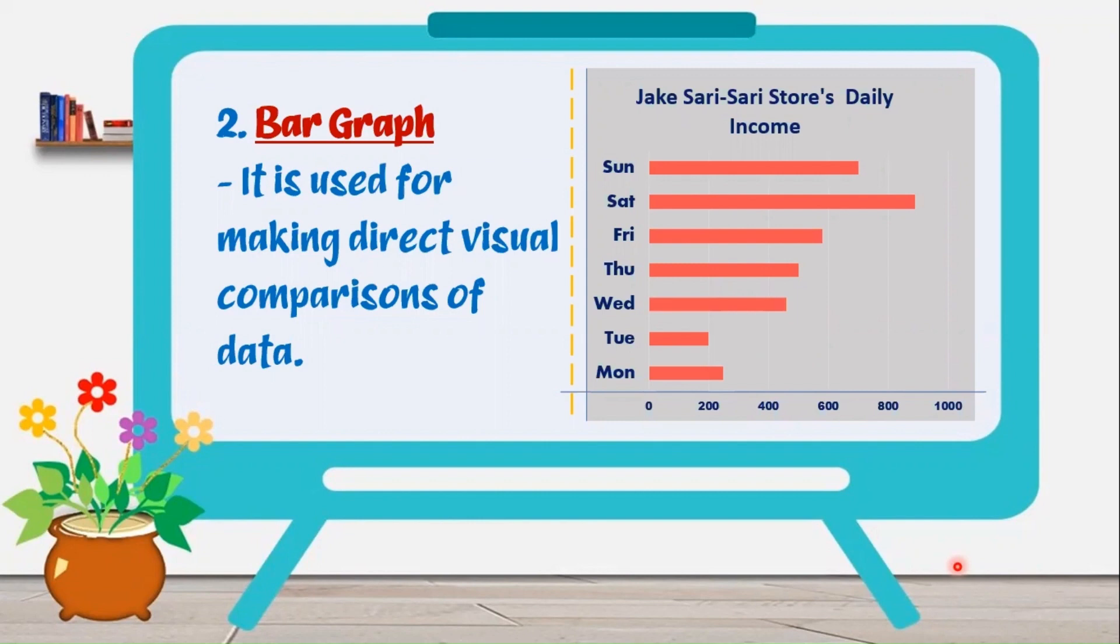This graph is advised to use for categorical data. Like in this example, we have Jake's Sari-Sari store's daily income. The days of the week that is reflected in the y-axis is an example of categorical data, opposite to the quantitative data that can be counted.